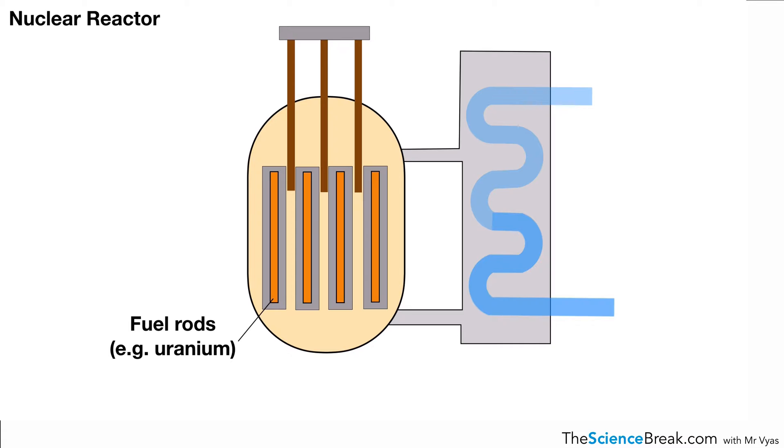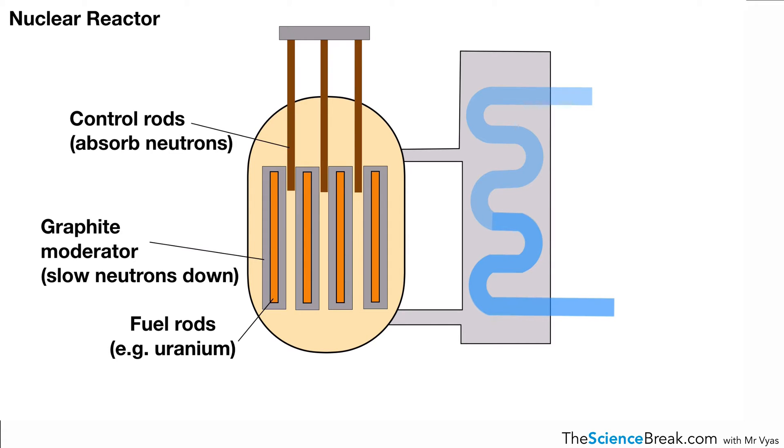Around the fuel rods, we have what are called graphite moderators, and the job of those is to slow neutrons down because we need slow moving neutrons in order to cause that fission reaction to happen. We also have at the top there, in a darker brown color, these are called control rods, and what they do is they absorb neutrons. If they are lowered into the reactor, they will absorb neutrons and slow the reaction down.